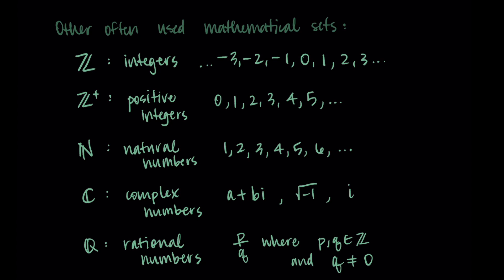And the opposite of a rational number would be an irrational number, meaning that it can't be written in this way. So these are some of the math symbols, the ways we denote these specific types of mathematical sets.